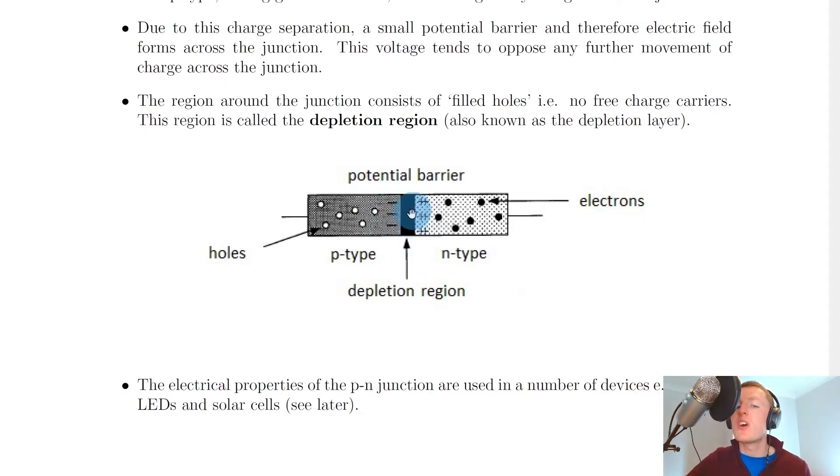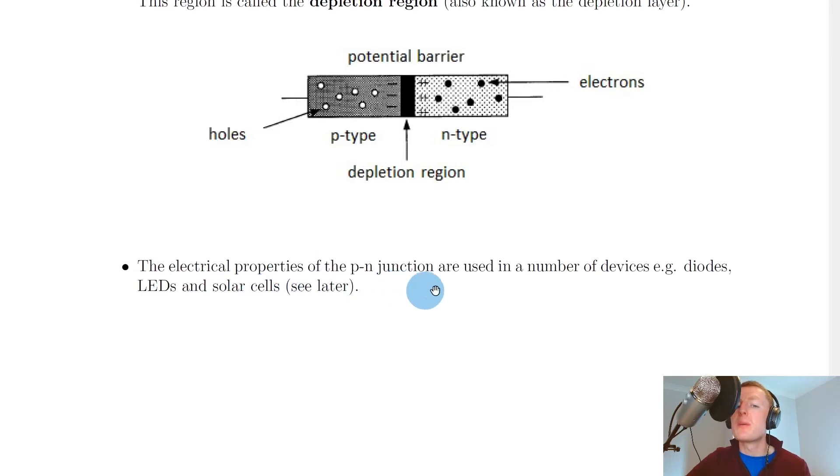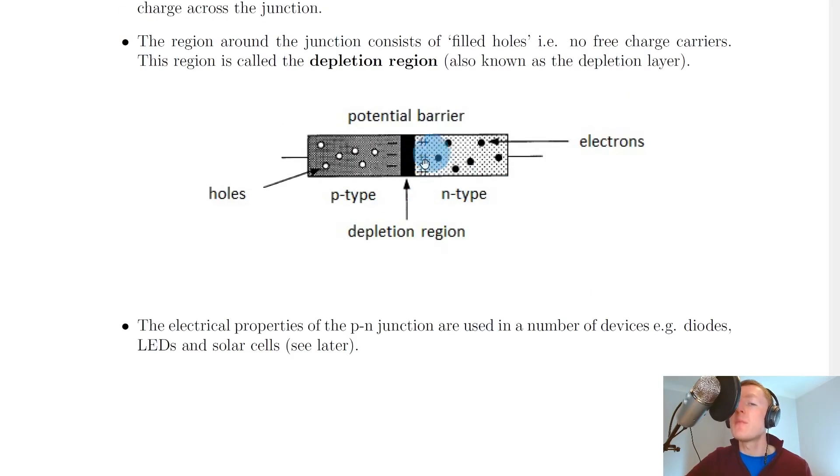In this way, we've created a P-N junction where no charge carriers can flow across the junction. However, the electrical properties of the P-N junction are used in a number of devices - for example, diodes, LEDs, and solar cells - where charge can be made to actually flow across the junction in one way.